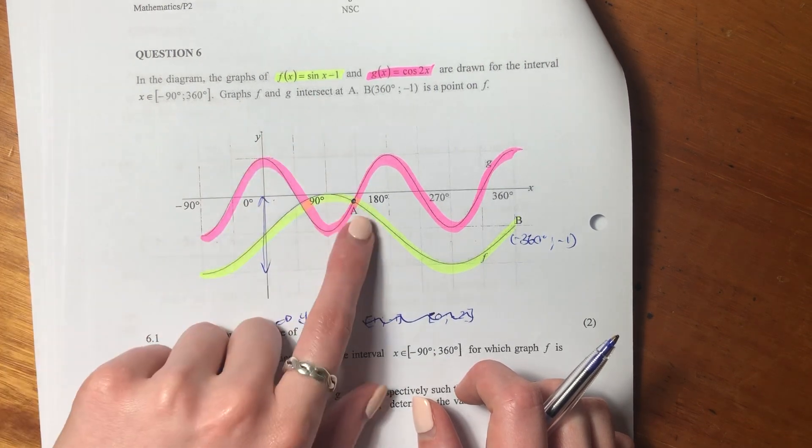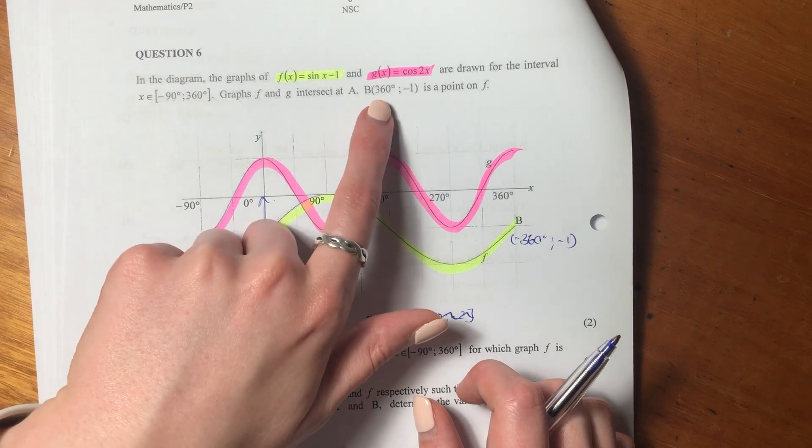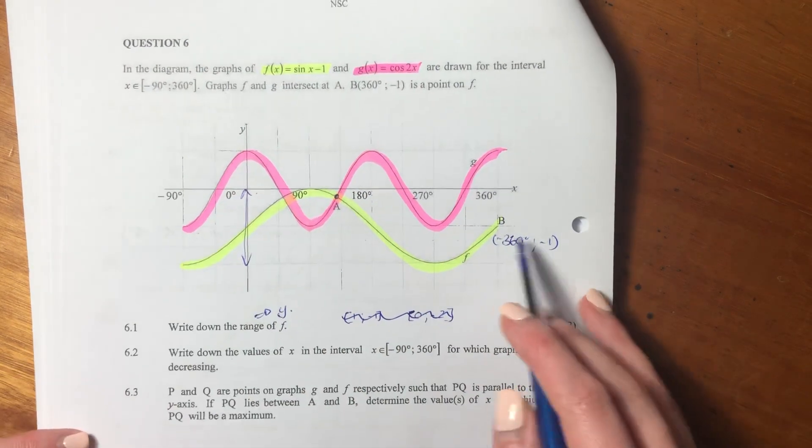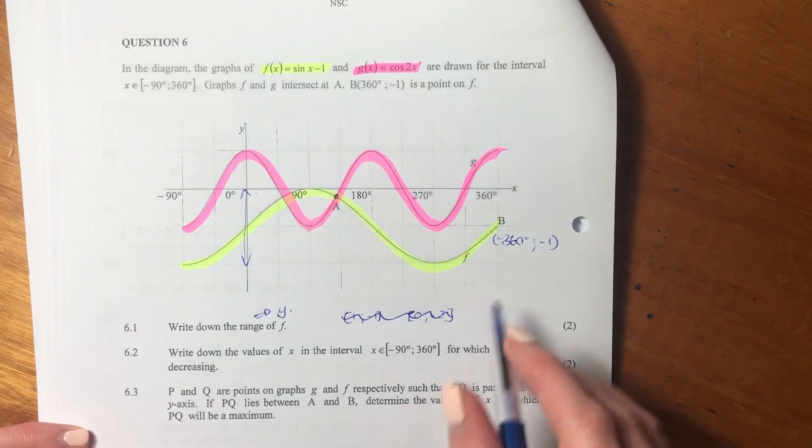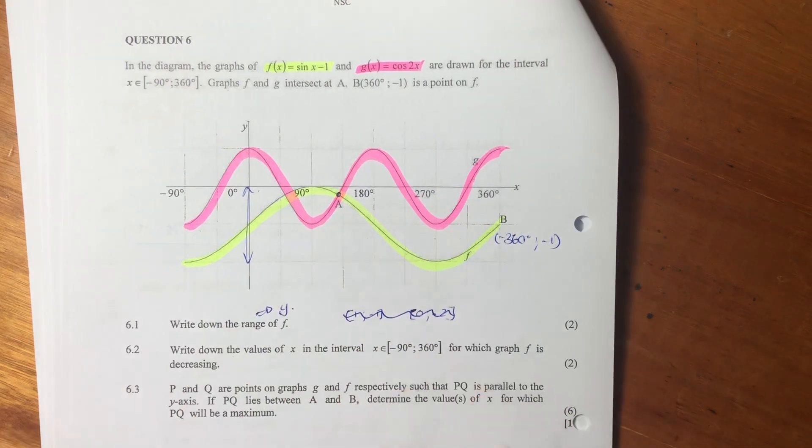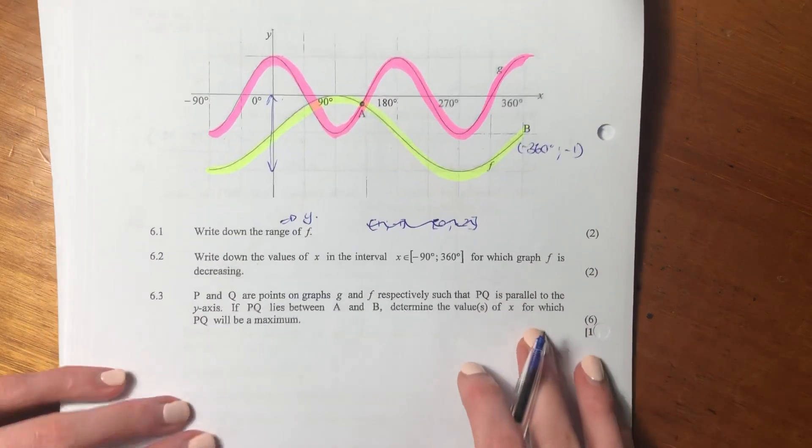Graph g and x intersected a, and then it says b, which is 360 and negative 1, so its coordinates, is a point on f. Let's now jump into the questions.